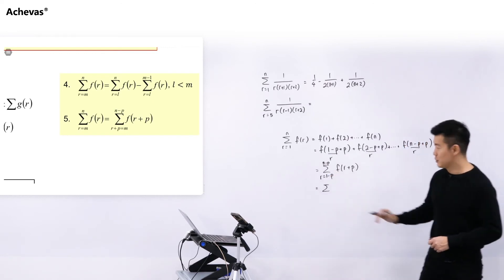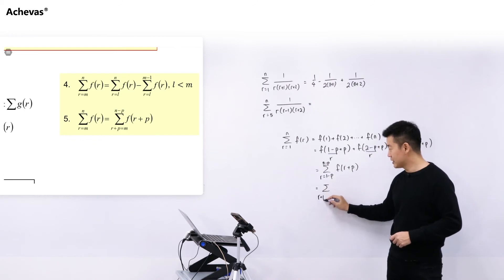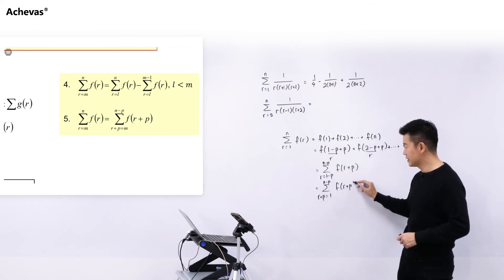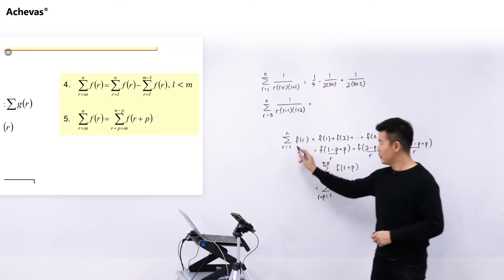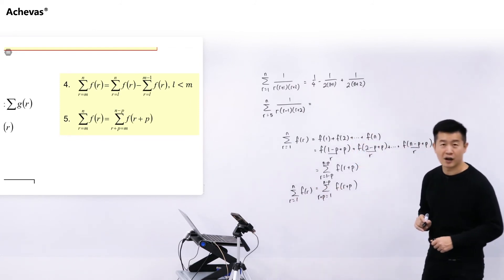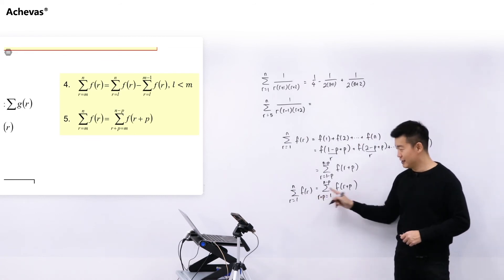So now what we can then do is, what if we were to move this minus P over to the left hand side, which means that we will be getting R plus P is equal to 1, then N minus P, then F R plus P. Let me write down this here. So R equal to 1 all the way until N of F R. So if you can see what we have just done is to replace all the R by R plus P.